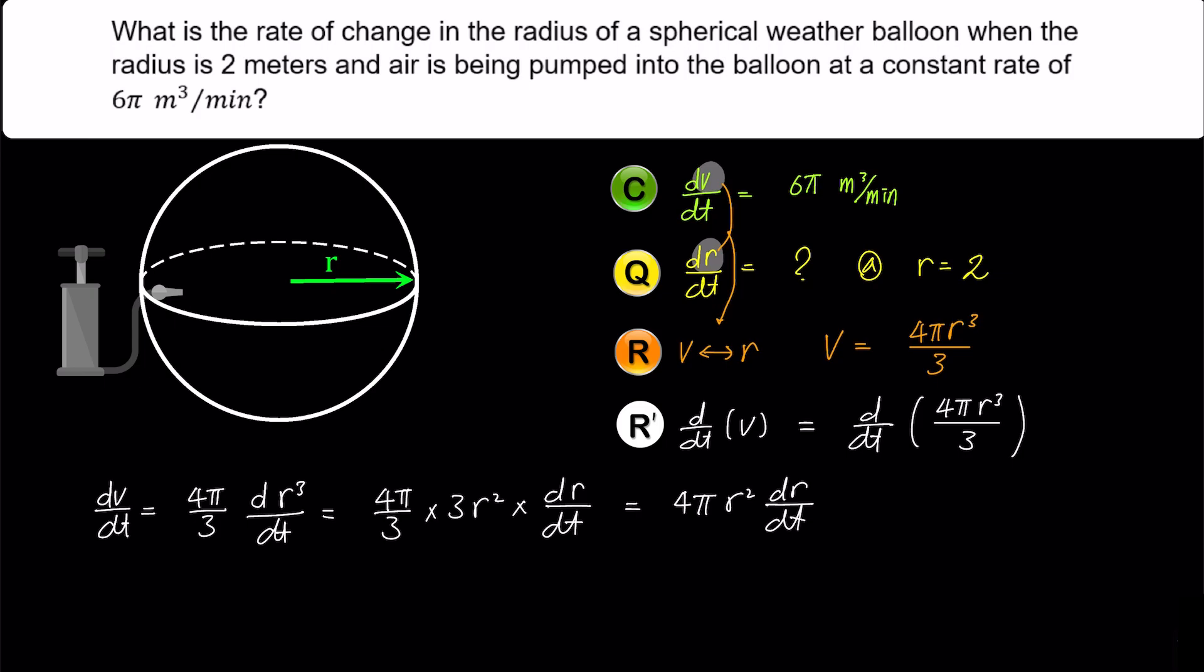Since the question is asking for dr/dt specifically, let's rearrange the equation to solve for it. Dividing both sides by 4πr² and simplifying gives us dr/dt equals 1/(4πr²) times dV/dt. Substituting r equals 2 and dV/dt equals 6π from the condition into the equation, we get dr/dt equals 6π/16π which simplifies to 3/8 meter per minute.